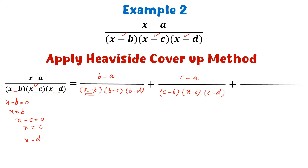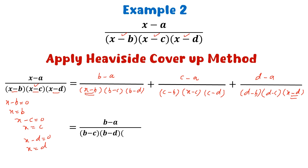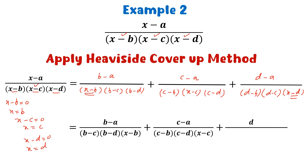For the third fraction, we put x minus d equal to 0 and get x equal to d. We replace x by d, but not in the factor x minus d, because we have obtained the value of x equal to d from this factor. This is the Heaviside cover-up method for a fraction with three non-repeated linear factors in the denominator. We simplify and get the partial fractions.